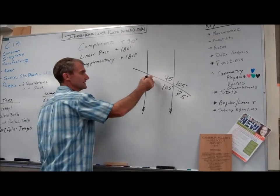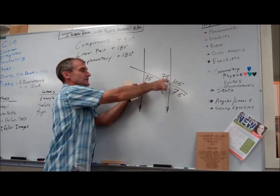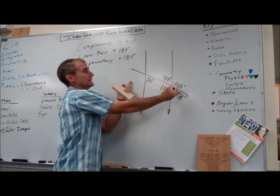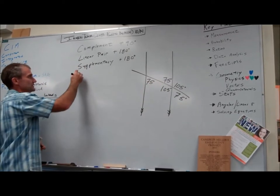And then this angle right here is 75 degrees because these two angles are called alternate, meaning opposite sides of the transversal interior angles. So those two are congruent. Those are alternate interior angles.